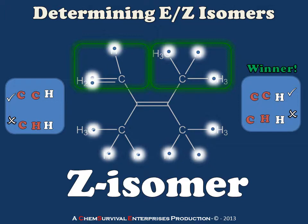There are many more complex examples of how this type of nomenclature can be applied, so you'll want to continue working through the problems in your book to be sure you understand all of the potential gotchas and nuances of using this naming system. But this is good enough to get you started. Have fun naming your E and Z isomers, and I'll see everybody next time.